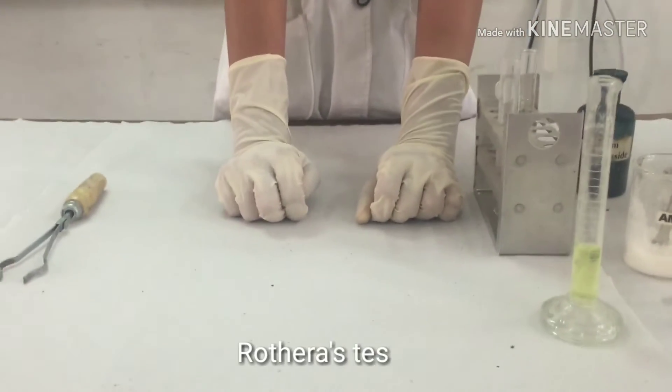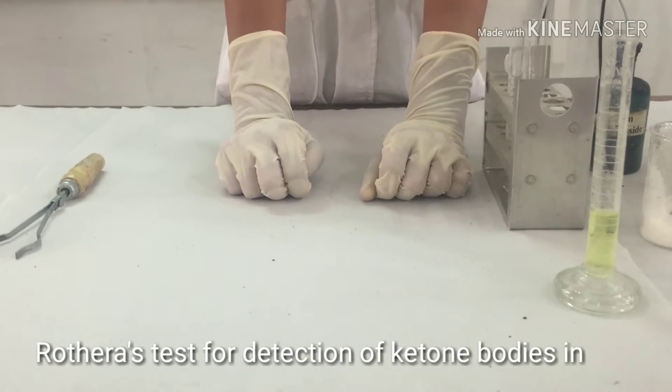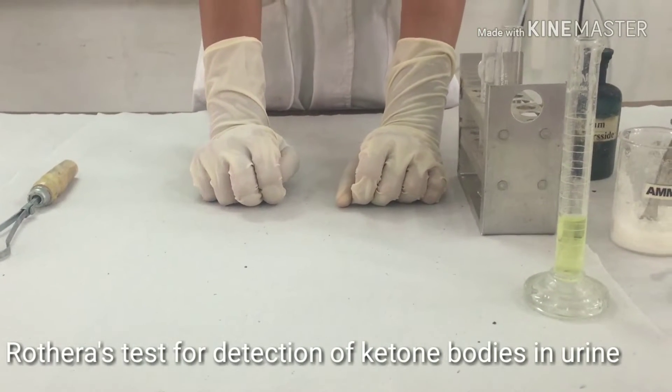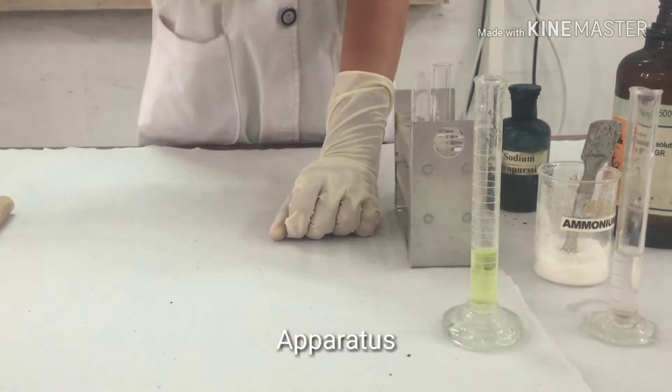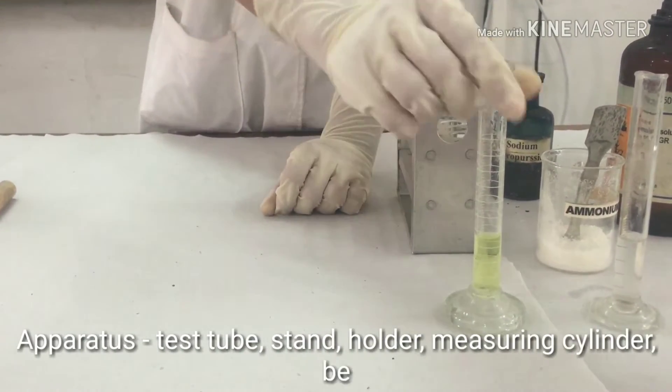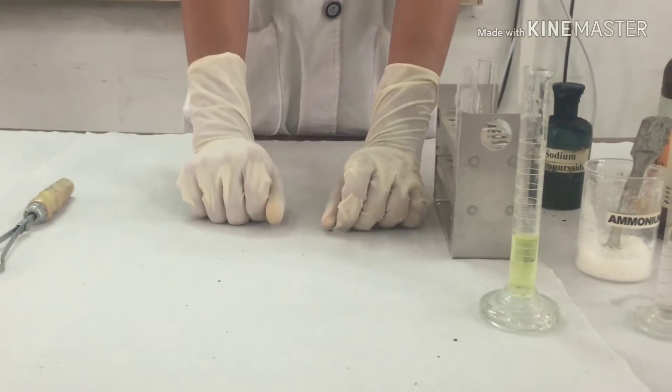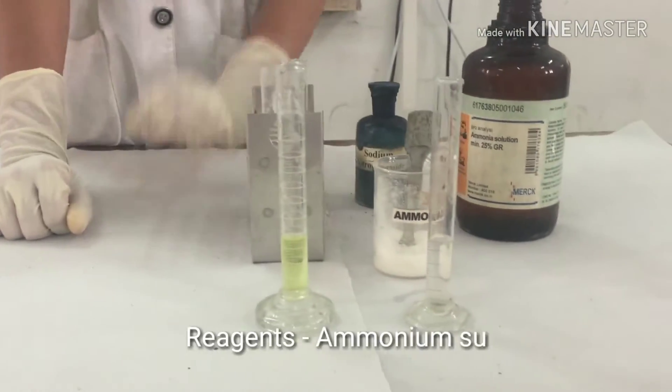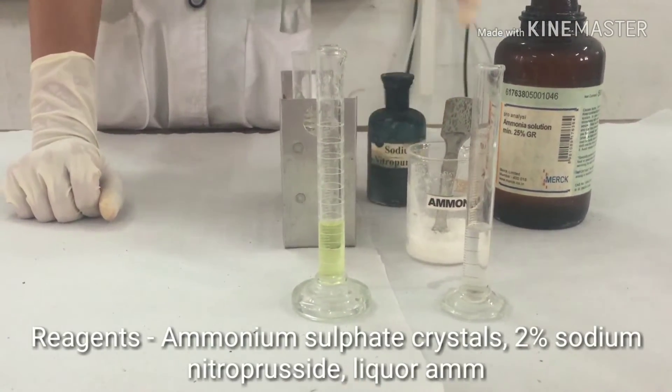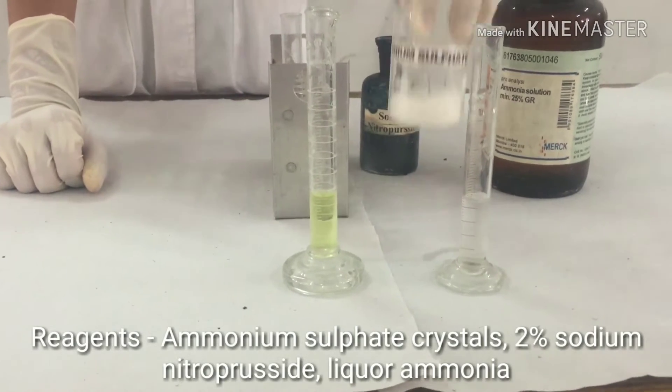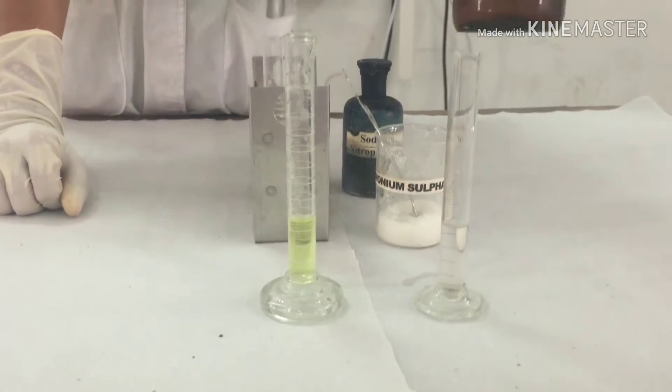We are going to perform Rothera's test for detection of ketone bodies in urine. The apparatus used for this test are test tube, test tube stand, measuring cylinder, and a test tube holder. The reagents used for this test are sodium nitroprusside, ammonium sulphate, and ammonia solution.